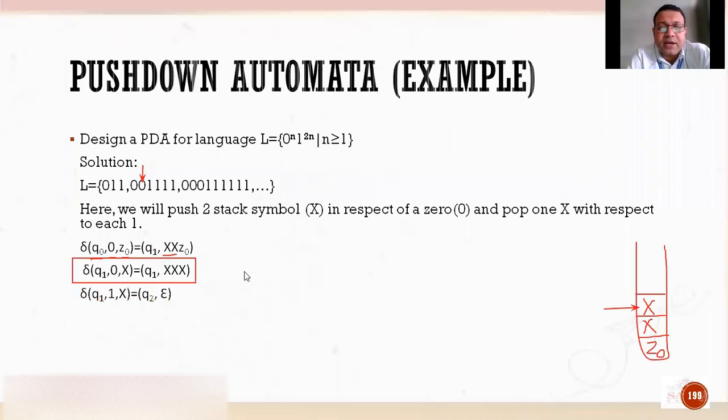Now what will happen? There will be a scenario when one comes. So you will be at q1 and one will appear in your input string, and on the stack top is x. So the rule was that whenever one comes, we have to start popping. So firstly I will change the state - I will switch from q1 to q2 and will start popping it out. So for popping, what do I have to write? Epsilon.